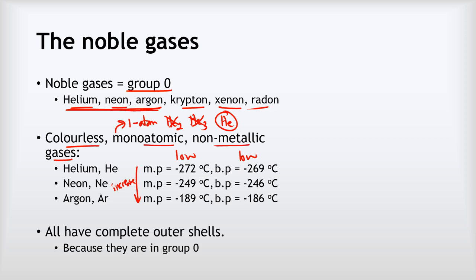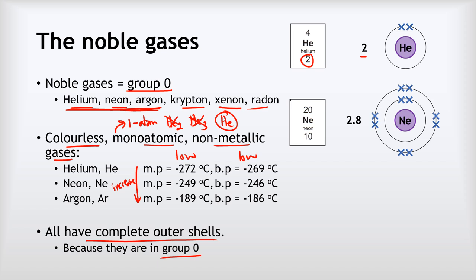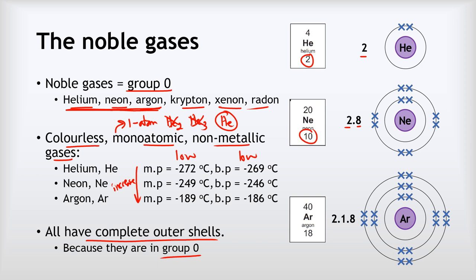In terms of their structure, all of the noble gases have complete outer shells because they are in group zero. Helium has an atomic number of two, which means it's got two electrons in its outer shell — one complete first shell. Neon has ten electrons: two in its first shell and eight in its outer shell, again a complete outer shell. And then argon has eighteen electrons: two in the first shell, eight in the second shell, and eight in the third shell — again a complete outer shell. That's the characteristic feature of the noble gases: they've all got complete outer shells.